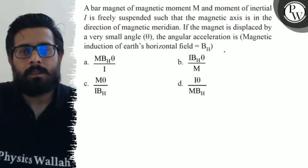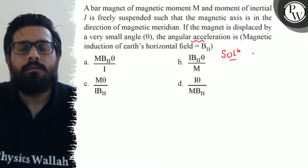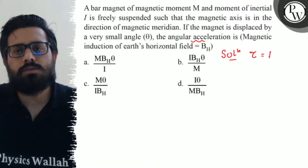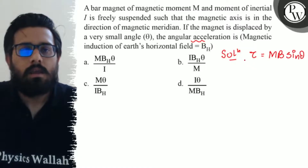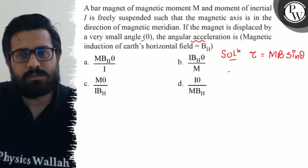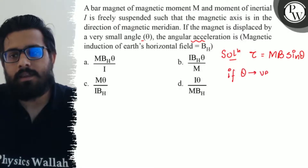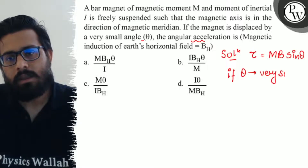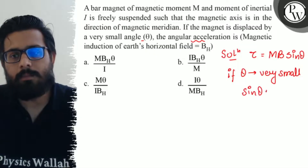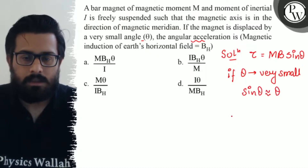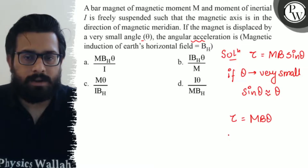We have to calculate the value of angular acceleration. We know that torque τ equals MB sinθ. It is also given that theta is very small, and we know that if theta is very small, then sinθ can be approximately written as θ. So the value of τ comes out to be MBθ.